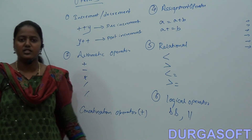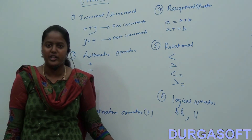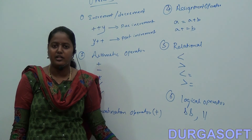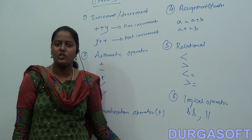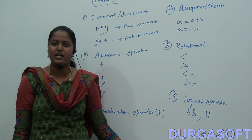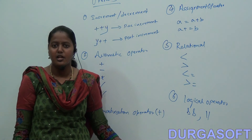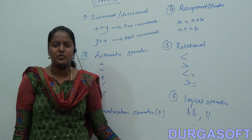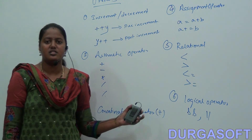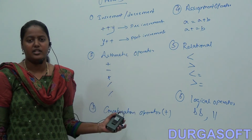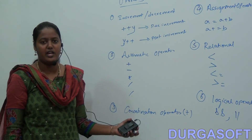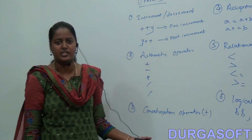The next operator is the new operator. By using the new operator you are going to create an object. So these are the several operators we have in .NET.